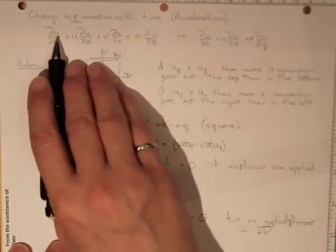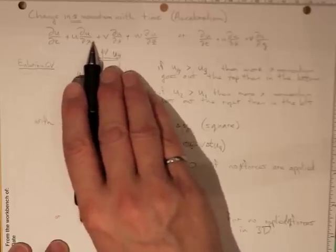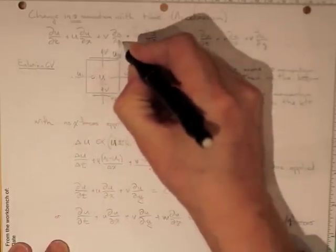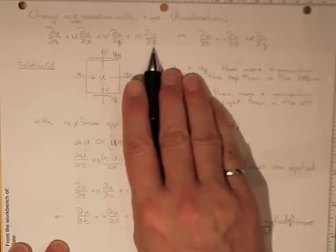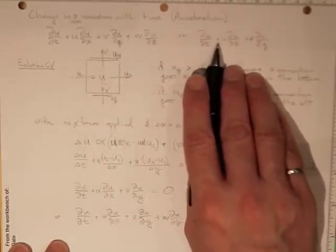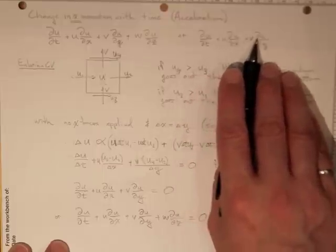And it looks like this: di u di t plus u di u di x plus v di u di y plus w di u di z, or in two dimensions, di u di t plus u di u di x plus v di u di y.